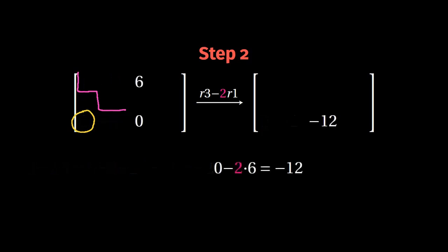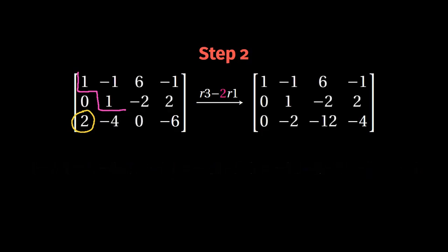Then we have zero minus two times six, which is equal to minus 12. Finally, we have minus six minus two times minus one, which is equal to minus four. And here, the final result.